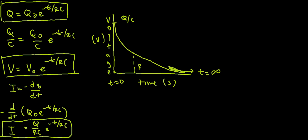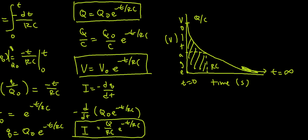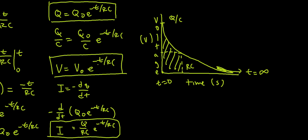At time RC, we lose roughly 37% of the charge. At t equals RC, the voltage is V₀ times e to the negative 1, or V₀ over e, which is roughly 36.8% of your maximum — meaning you've retained 36.8% of the initial voltage at that point.